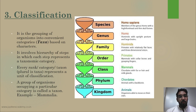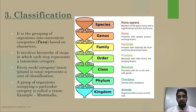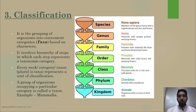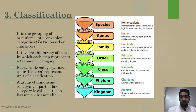Classification involves a hierarchy of steps where each step represents a taxonomic category. Every rank or taxon represents a unit of classification — a brick to build the classification tree. A group of organisms occupying a particular category is called the taxon. For example, Mammalia is a class which comes under Chordata, which comes under the animal kingdom.